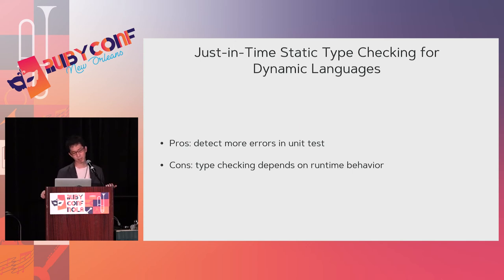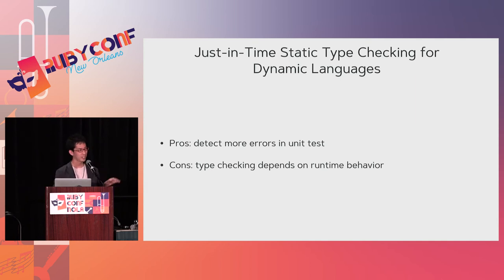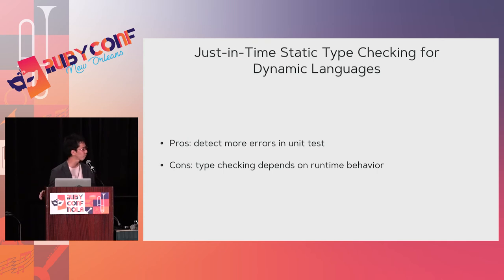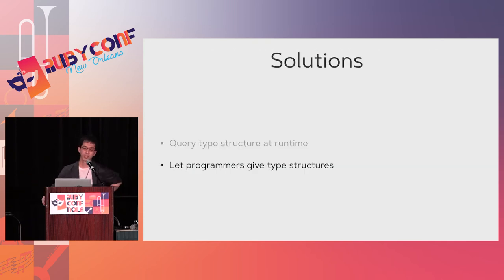However, in my opinion, I don't like this approach because type checking depends on runtime behavior. If your program requires some library that is not called in production, some classes in your program may have another method not available in production — or similar issues. So I want to move to the next approach.